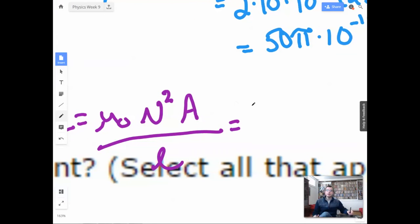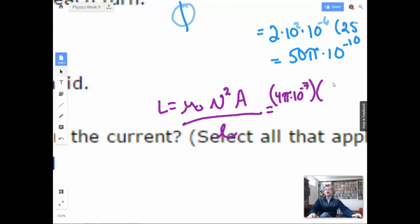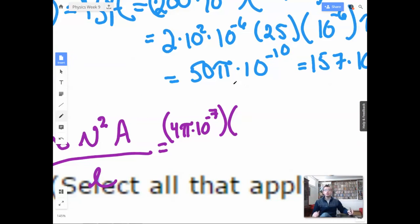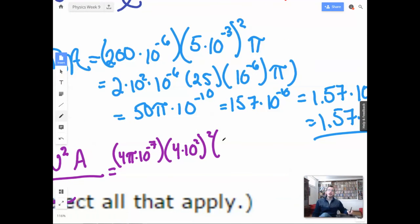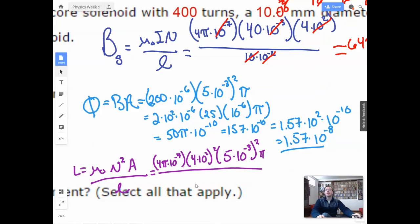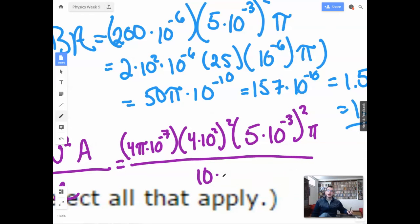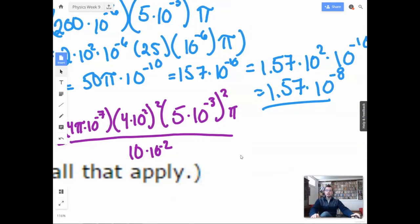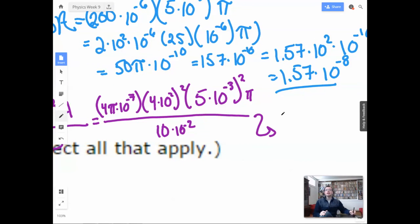So mu naught is going to be 4 pi times 10 to the negative 7th. Almost got me there. N is 400. So it'll be 400, 4 times 10 to the 2nd, squared. Area, where we pi r squared, which will be 5 times 10 to the negative 3rd squared pi. All over length. And the length, I think we said, was 10 centimeters. So it'll be 10 times 10 to the negative 2nd. So let's start doing some simplifications. Looks like we got two pi's in there. Lots of squares. So let's do, I'm not going to do it that way. 4 times 5 is 20. 20 times 4 is 80. So all the numbers add up together are 80.